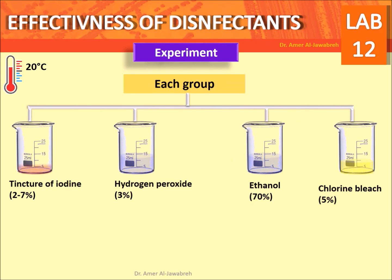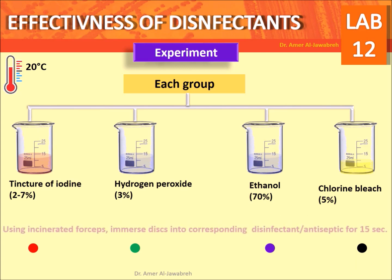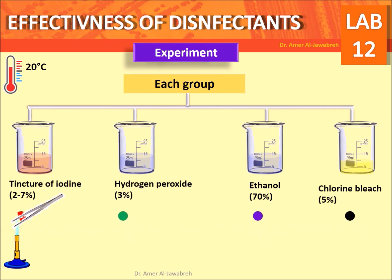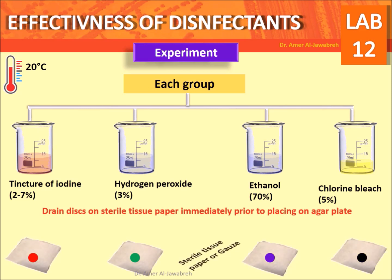For each group, provide 25 ml beakers with 10 ml of the tested disinfectants or antiseptics. Puncture disks from different colored papers, using the color as a label code. Using incinerated forceps, immerse each disk into the corresponding disinfectant or antiseptic for 15 seconds, then drain on tissue paper immediately prior to placing on the agar plate.